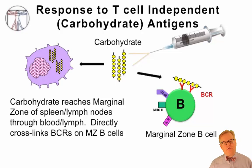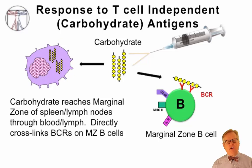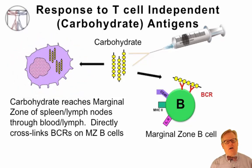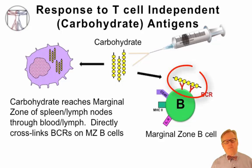The way the immune system responds to carbohydrate antigens is different from how it responds to T-cell dependent protein antigens. Carbohydrate antigens injected via vaccine circulate in blood and lymph and come into contact with the marginal zone in lymph nodes and spleen. In the marginal zone, there are phagocytic cells with specialized scavenger receptors able to bind and ingest carbohydrate antigens, and specialized B-cells known as marginal zone B-cells. These marginal zone B-cells have innate-type properties and can respond to carbohydrate antigens without requiring T-cell help, as the repetitive structure of carbohydrates allows them to cross-link B-cell receptors.